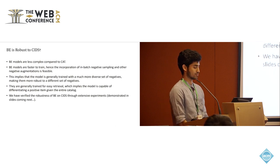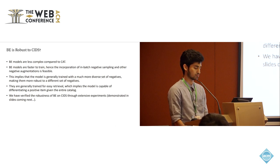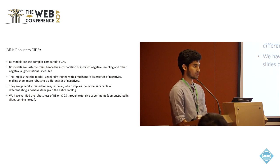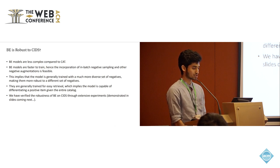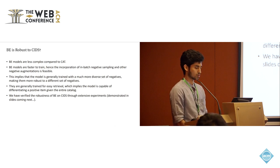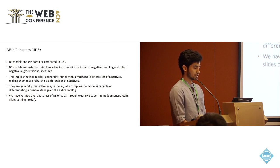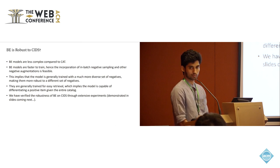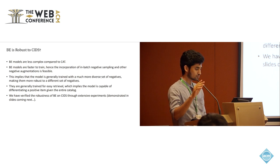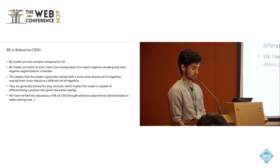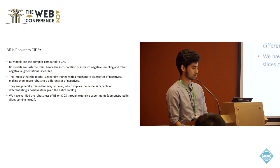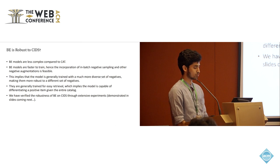Before moving forward, let me state that BiEncoders are robust to CIDS. BiEncoder models are less complex compared to CAT models because of their architectural differences. Due to this, these are faster to train, and incorporation of inverse negative sampling and negative augmentation is way easier in BiEncoder models compared to CAT models. Since they are less complex and faster to train, the model is generally trained with a much more diverse set of negatives, making them more robust to different sets of negatives, unlike CAT.